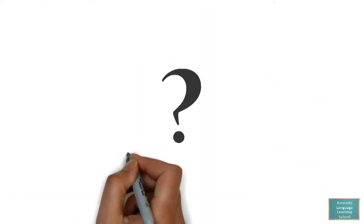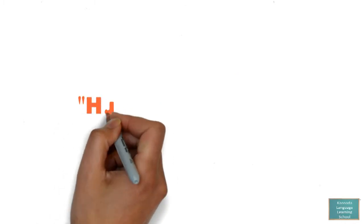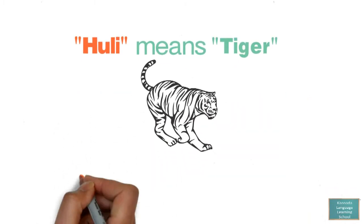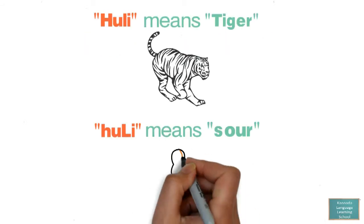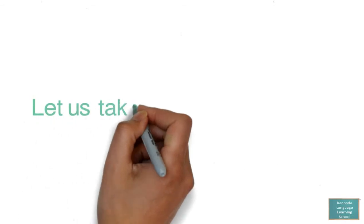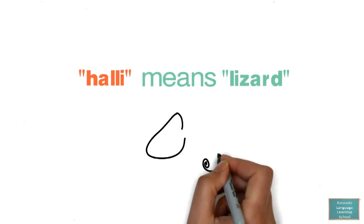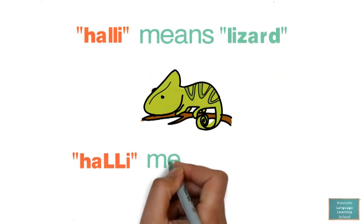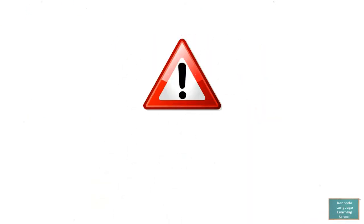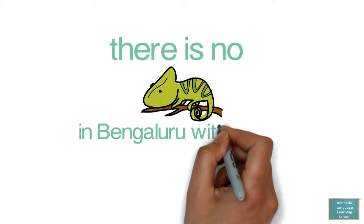Do you know what happens if you pronounce these letters the wrong way? In Kannada, 'huli' means tiger, whereas 'huli' means sour — which is the taste of tamarind. Let us take a funny example: 'huli' means lizard, whereas 'huli' means village. So be careful when saying 'Maratha huli' — of course there is no lizard in Bengaluru with the name Marath, so you are safe.